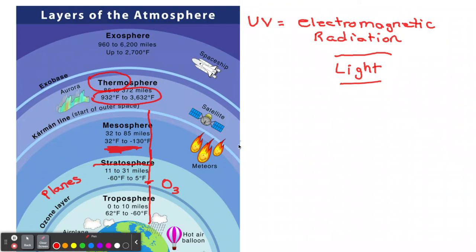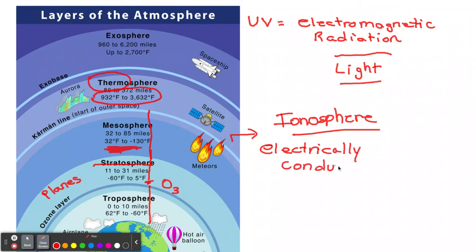But in the thermosphere, in the lower level of the thermosphere, we have the ionosphere. So it's part of the thermosphere. And the ionosphere is electrically conductive. In other words, there's charge there. There are ions there. And ions are charged atoms. So the ionosphere is electrically conductive because of these ions.